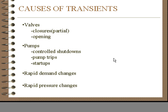This presentation deals with the data required to describe the cause of transients. The causes of transients are valves opening and closing, pumps, controlled shutdowns, startups, or trips where the power fails to the pump and we have an uncontrolled shutdown, rapid demand changes such as a fire hydrant opening and closing, and rapid pressure changes.